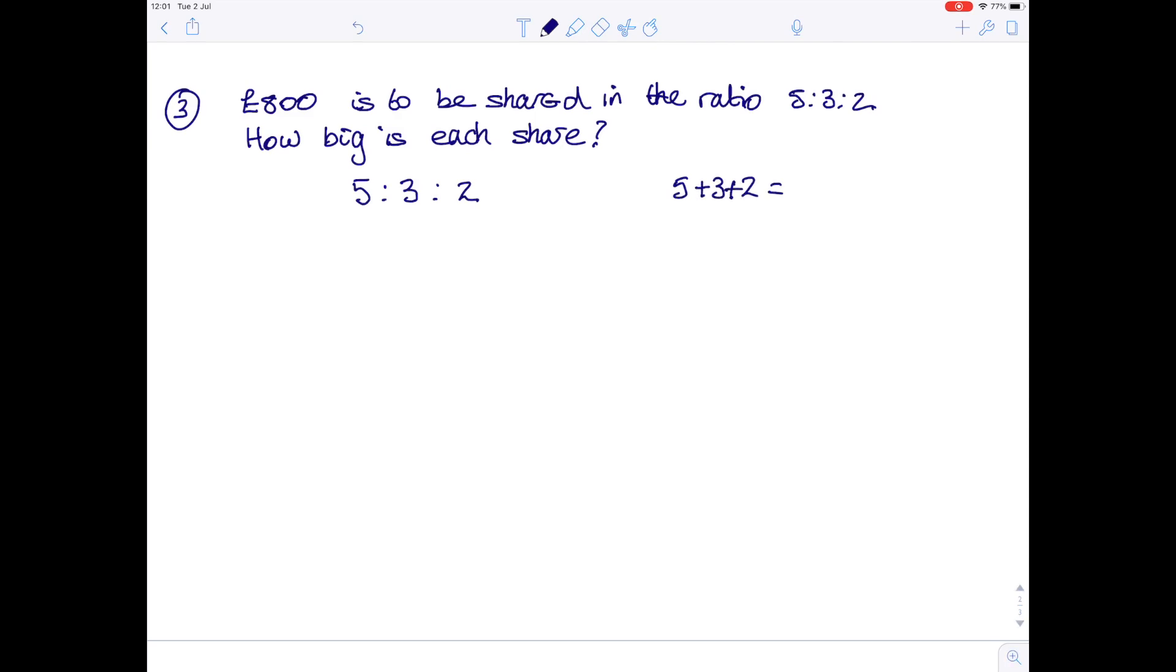So we're thinking in groups of 10. The £800 is going to be shared up in groups of 10, so we do £800 divided by 10, which gives you £80. So each of our parts is worth £80. If we go back to the ratio, it's being shared 5 to 3 to 2, each part is worth £80.